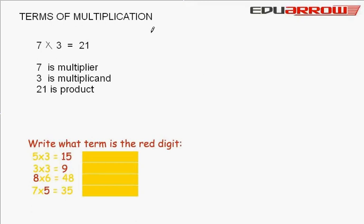Terms of Multiplication. 7 multiplied by 3 is equal to 21. In this, 7 is the multiplier, 3 is the multiplicand, and 21 is the product.